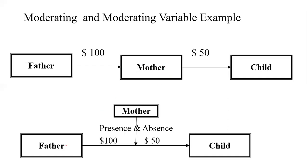Now consider another example where the father is directly trying to give money to the child. When the mother is present, the father gives the child 50 or 100 rupees. But when the mother is not present, the father and child have a different relationship in terms of pocket money. Just because of the mother's presence or absence, the relationship between father and child changes — so here she is acting as a moderator.